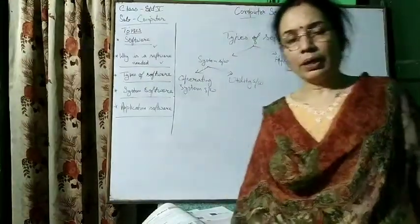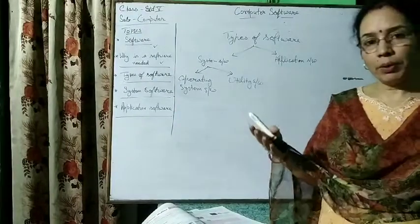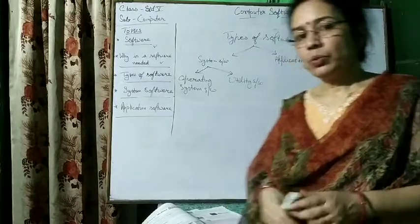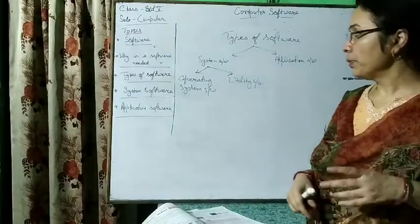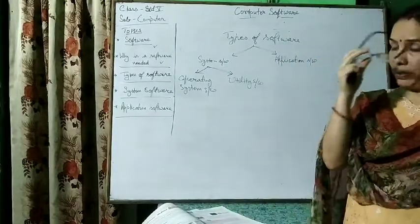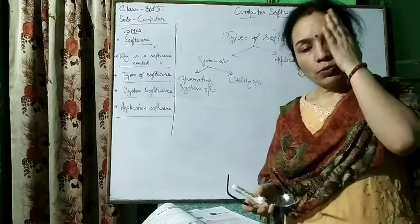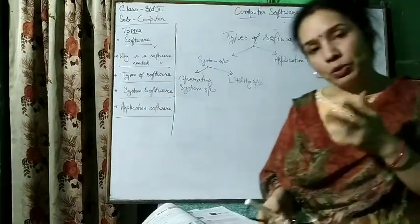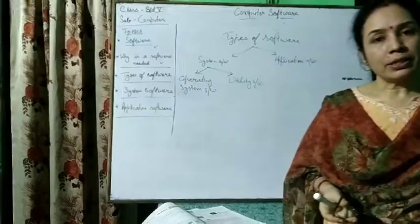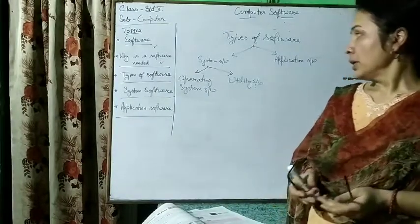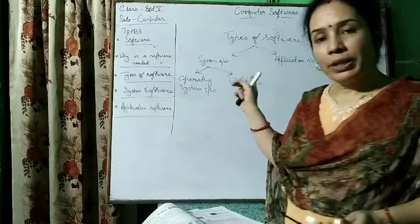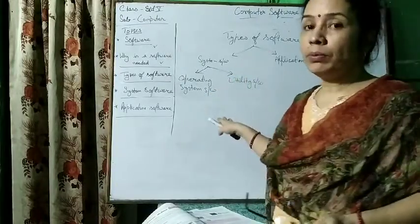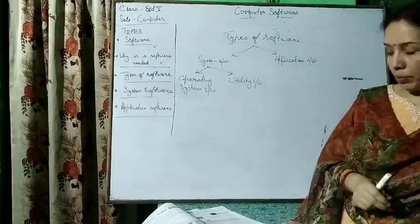Our topic today is utility software. In the previous video, we discussed that there are two types of software: system software and application software. System software is further categorized into two categories: operating system software and utility software. We had discussed operating system software, and now we will talk about utility software.